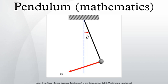Compound pendulum: a compound pendulum is one where the rod is not massless and may have extended size. That is, an arbitrarily shaped rigid body swinging by a pivot. In this case the pendulum's period depends on its moment of inertia I around the pivot point. The equation of torque gives the relationship.